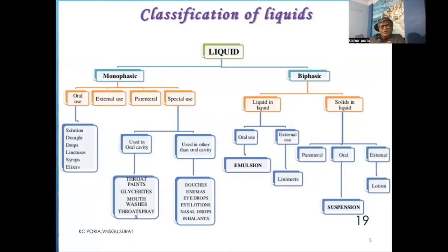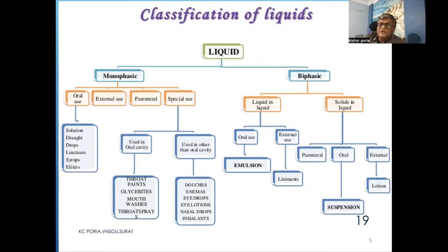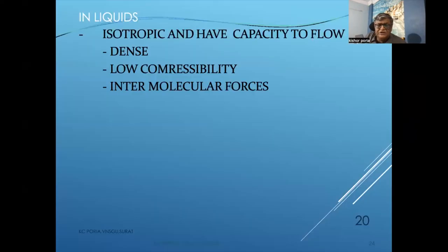The basic classification of liquids includes monophasic and biphasic phases. In the monophasic case, we have solutions, drops, linctuses, and syrups used in oral and other cavities. In the biphasic phase, liquid in liquid is called an emulsion. Solid in liquid is called a suspension. More information about these colloidal phases will be given at an appropriate point in this lecture.